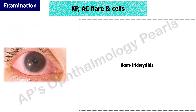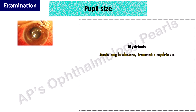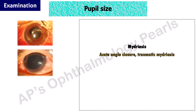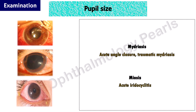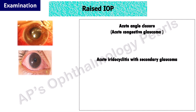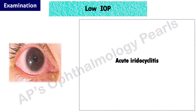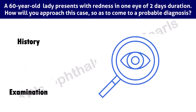The presence of keratic precipitates, cells, and flare in the anterior chamber are indicative of acute iridocyclitis. A mid-dilated, vertically oval pupil is characteristic of acute angle closure and occurs due to pressure-induced ischemic paralysis of the sphincter. Traumatic mydriasis occurs due to traumatic iris sphincter damage. A small, sluggishly reacting pupil with a muddy iris is characteristic of acute iridocyclitis. A red eye with elevated intraocular pressure could indicate acute angle closure, acute iridocyclitis with secondary glaucoma, or one of the lens-induced glaucomas. A low intraocular pressure is usually present in acute iridocyclitis, due to ciliary shock and non-production of aqueous due to inflammation. This is how a step-by-step approach can help in arriving at a diagnosis in a case of red eye.